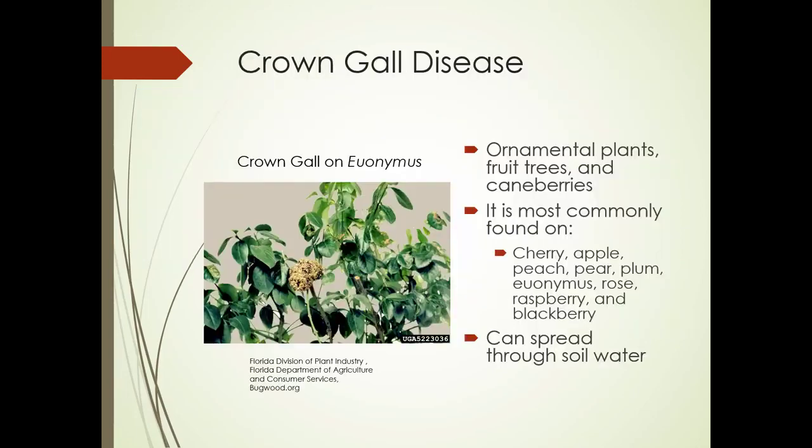Crown gall disease can happen on ornamental plants, fruit trees, and cane berries. It's most commonly found on cherry, apple, peach, pear, plum, euonymus, rose, raspberry, and blackberry. It can spread through soil water.